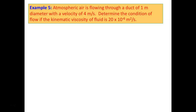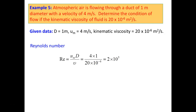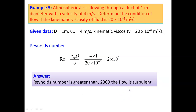Example 5: Atmospheric air is flowing through a pipe of 1 m diameter with a velocity of 4 m/s. Determine the condition of the flow if the kinematic viscosity of the fluid is 20×10⁻⁶ m²/s. This is internal flow. Reynolds number = U×D/ν = (4×1) / (20×10⁻⁶) = 2×10⁵. For internal flow, the laminar condition requires Re < 2300; if Re > 2300, the flow is turbulent. Since Re = 2×10⁵ is much greater than 2300, the flow is turbulent.